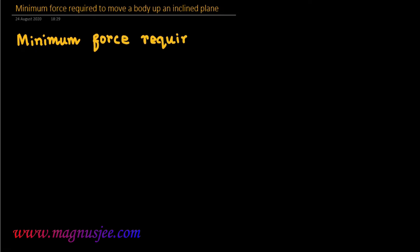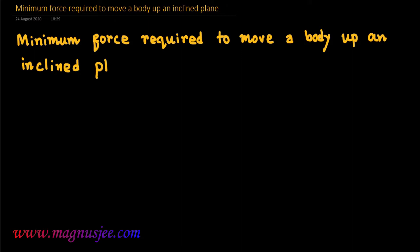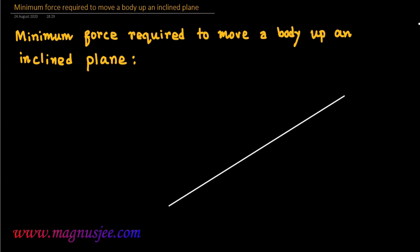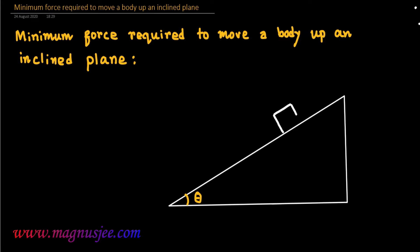We need to find the minimum force required to move a body up a rough inclined plane. We draw an inclined plane AB where theta is the angle of inclination, and the body is placed on the inclined plane.